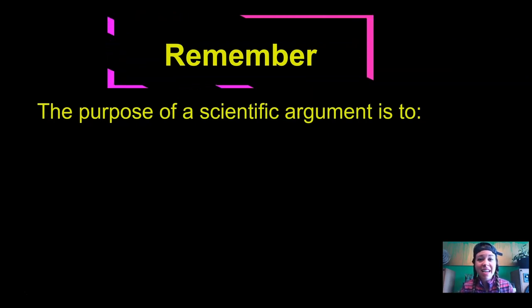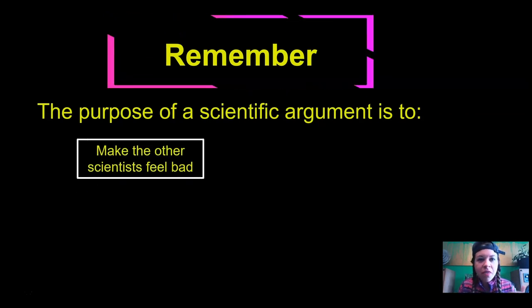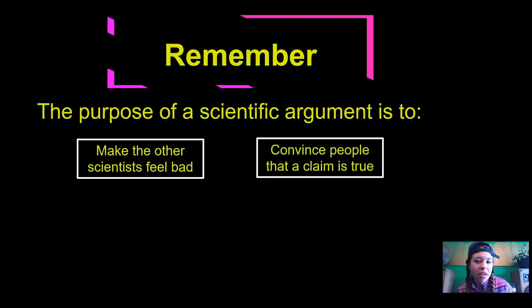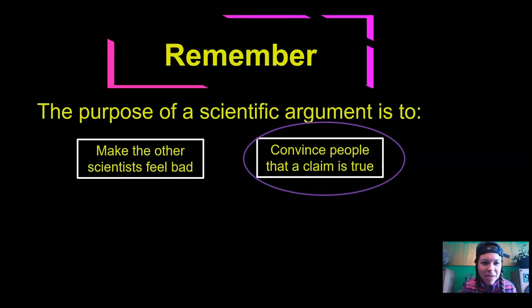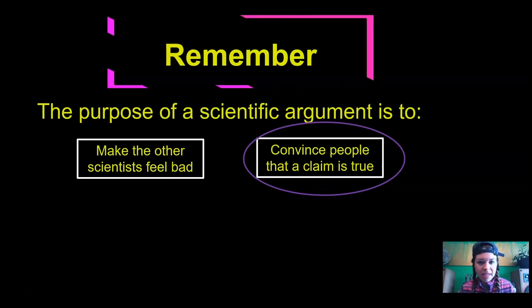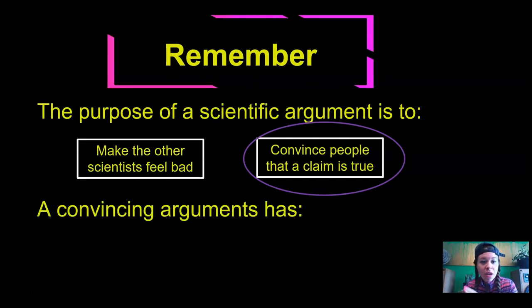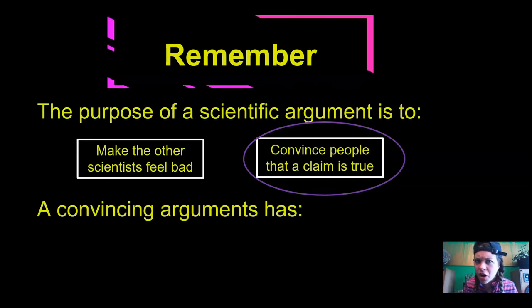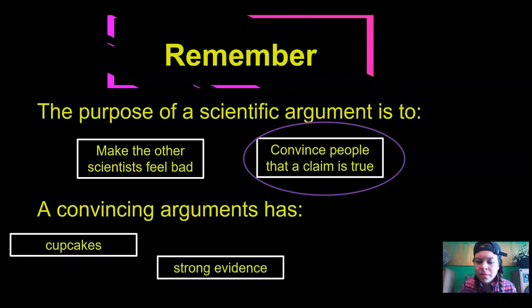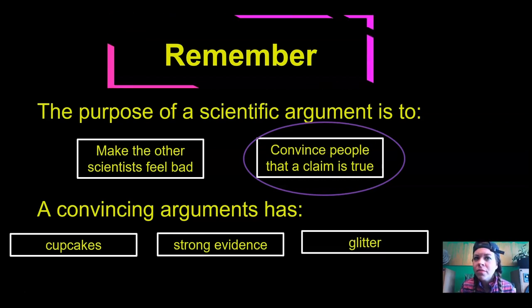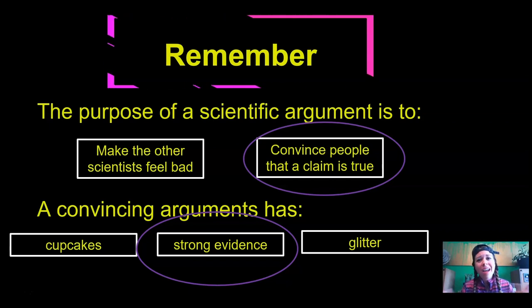We're going to be making a scientific argument, and the purpose of a scientific argument is — pop quiz — is it to make other scientists feel bad, or is it to convince people that a claim is true? It's to convince people that a claim is true. You may think of an argument as two people fighting with each other, but that's not what a scientific argument is. A scientist uses all the evidence they can gather to convince people that a claim is true. A convincing argument must have strong evidence — not cupcakes or glitter, though those are great.